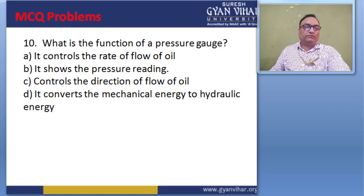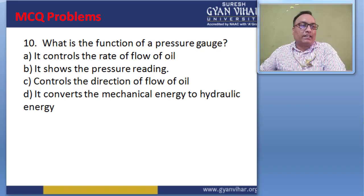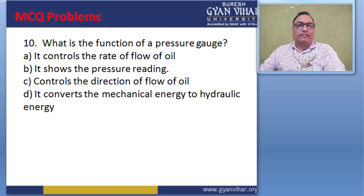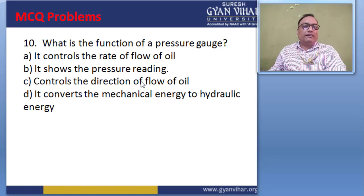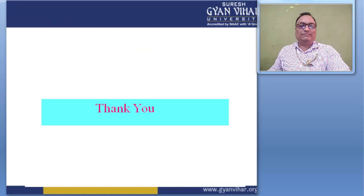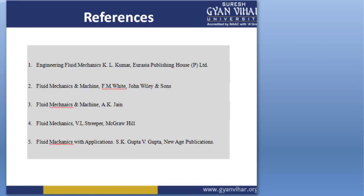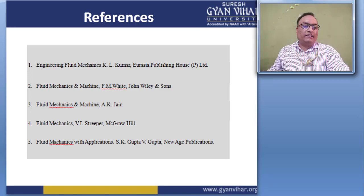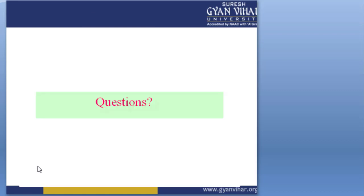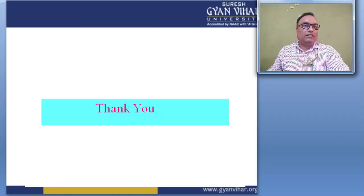Question 10 — What is the function of a pressure gauge? Options: controls rate of flow, shows pressure reading, controls direction of flow, converts mechanical energy to hydraulic energy. The correct answer is B — it shows the pressure reading. These are the references for this lecture. Thank you for your kind attention.